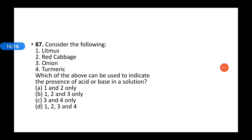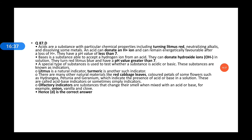Next question: Consider the following — litmus, red cabbage, onion, and turmeric. Which of the above can be used as indicators of the presence of acid or basic solution? All of them — litmus, red cabbage, onion, and turmeric — are used as indicators for the presence of acid or base in a solution. Acids are substances with particular chemical properties, including turning litmus red, neutralizing alkalis, and donating hydrogen ions.